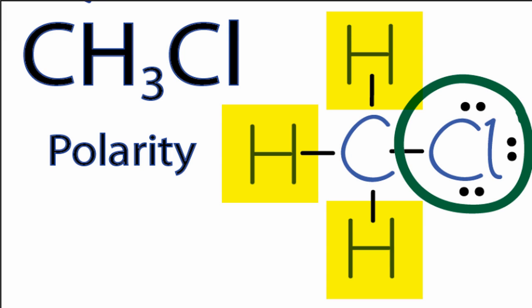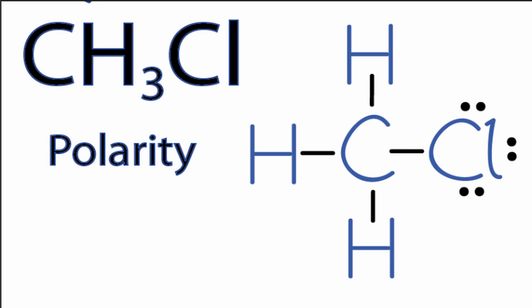Chlorine is a very electronegative element, so we have a big difference in electronegativities. The molecule's not symmetrical, so they're not going to cancel out. This leads us to believe that CH3Cl is probably going to be a polar molecule.